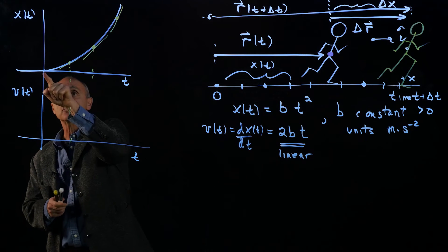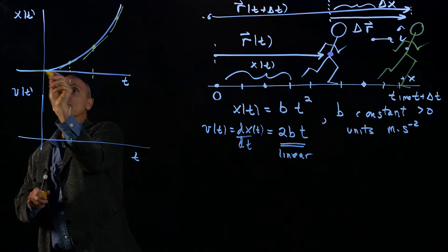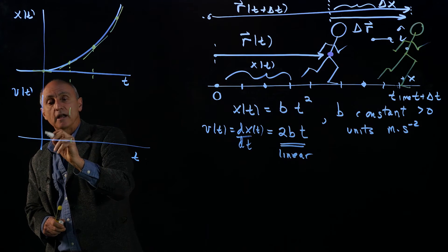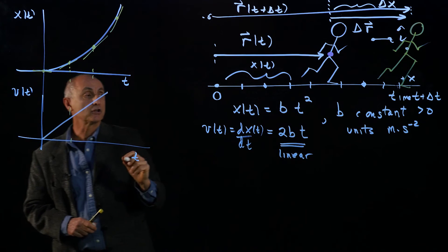And so our velocity function, the initial slope is 0 at t equals 0, and it's increasing linearly in time. So we'll just draw that as some linear function.